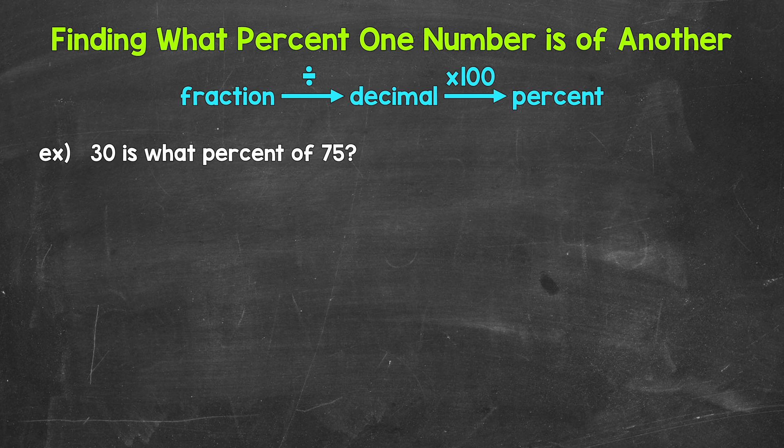Now for 30 is what percent of 75, let's think of this as 30 out of 75. 30 is the part and 75 is the whole. So we can set this up in fractional form as 30 over 75.